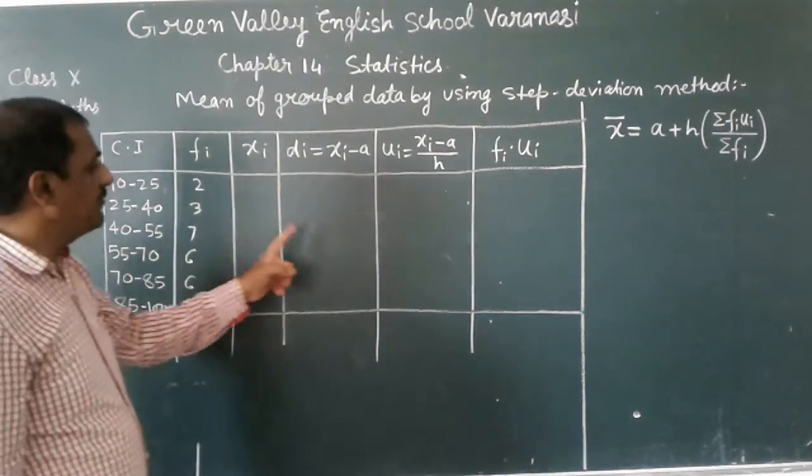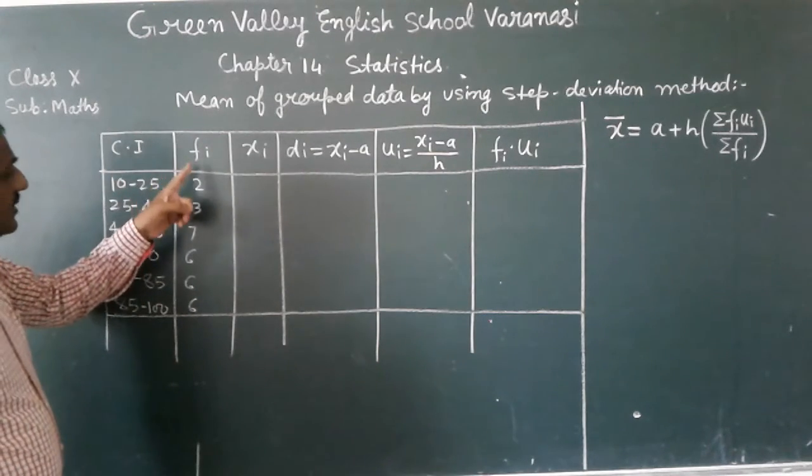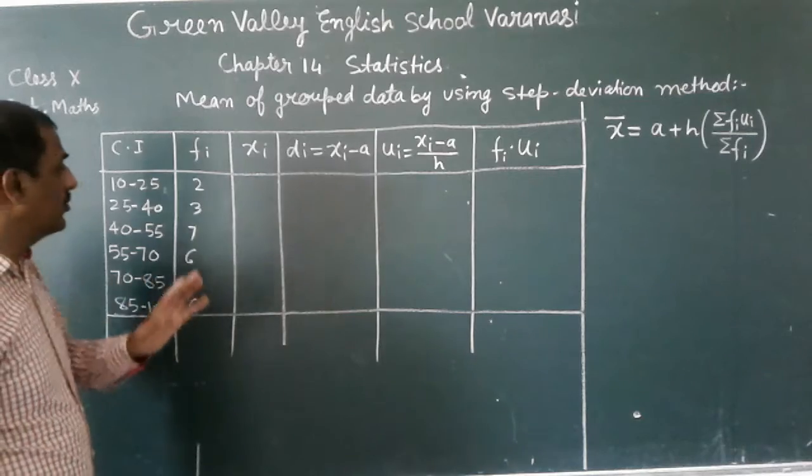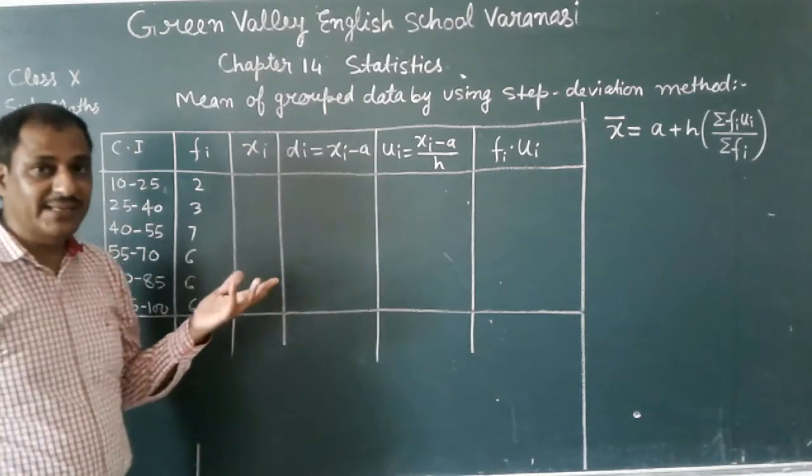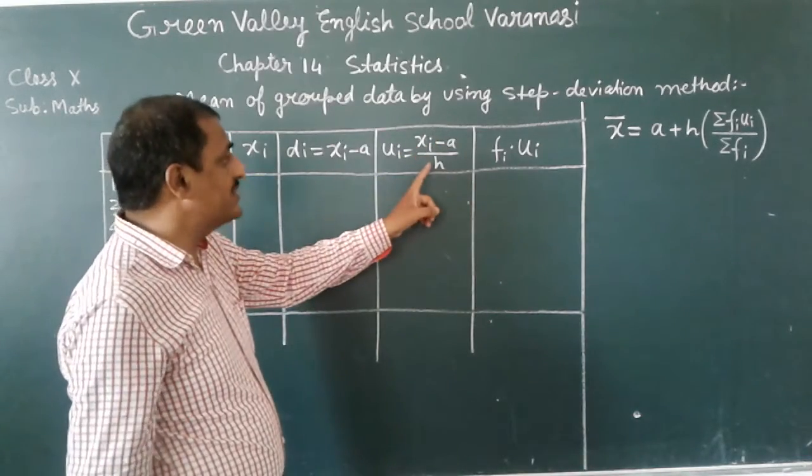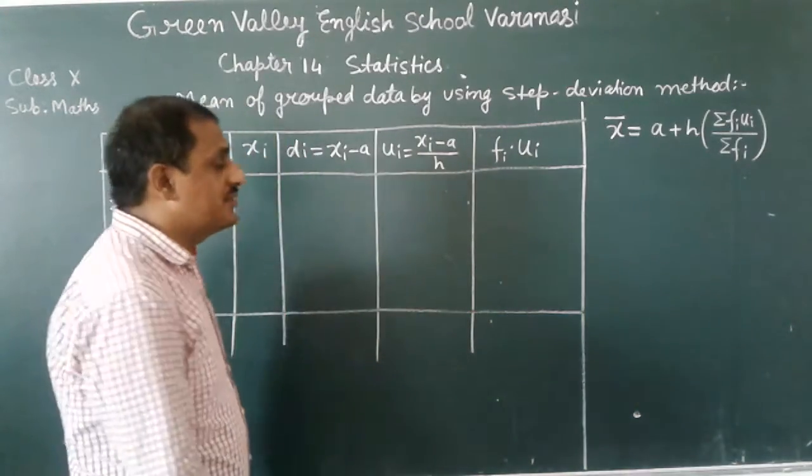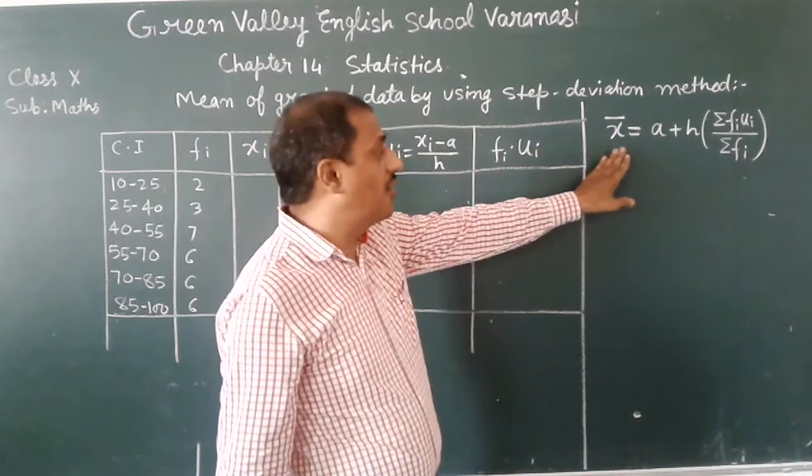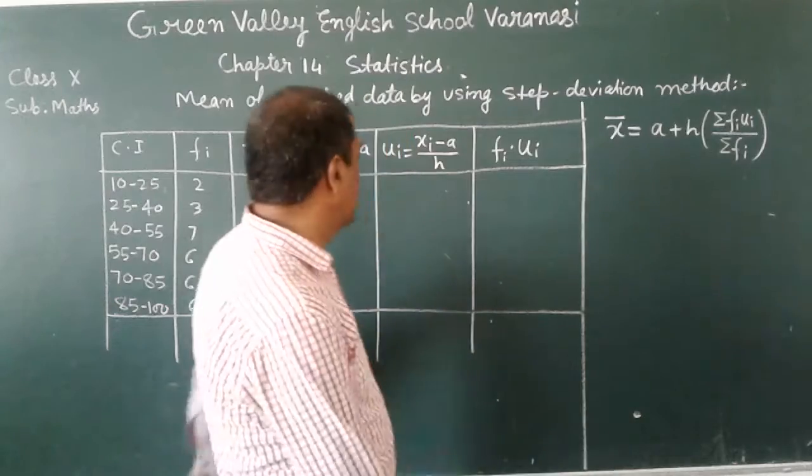Here we have how many columns: 1, 2, 3, 4, 5, 6. In the first column the class is given, in the second column frequency, in the third column this is xi (xi means class mark), and this is di. Here di is the deviation xi minus A, and here ui is equal to xi minus A upon h. Here h is the class size and A is the assumed mean. So fi into ui. This is the formula of finding mean of grouped data by using step deviation method. Here x bar is the mean of the given data: A plus h into summation of fi ui upon summation of fi.